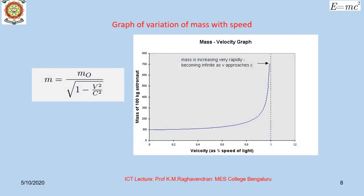Let's take a look at the relativistic formula for the variation of mass with speed. As the speed of the body tends to 0, the mass tends to the rest mass m0. And as the speed tends to c, the mass tends to infinity. This means material objects moving at the speed of light would have infinite mass; in other words, material objects cannot have a speed greater than c. In fact, even reaching c is impossible, though the speed can approach c as closely as possible. The variation of mass with speed is shown graphically.